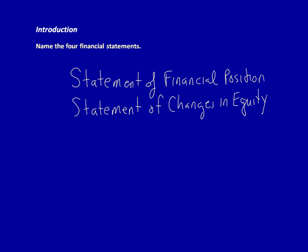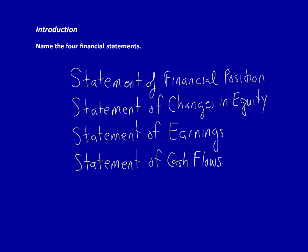The second is the Statement of Changes in Equity. The third is the Statement of Earnings, which can also be called the Income Statement or the Profit and Loss Statement, but I'm going to call it the Statement of Earnings moving forward. The fourth is the Statement of Cash Flows. These are the four main financial statements. In addition, you would have the notes to the financial statements, but we'll cover that in another video.